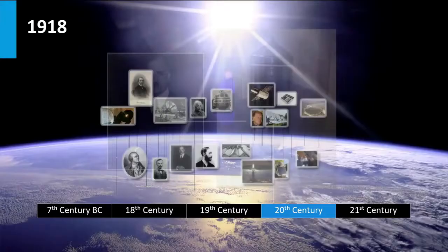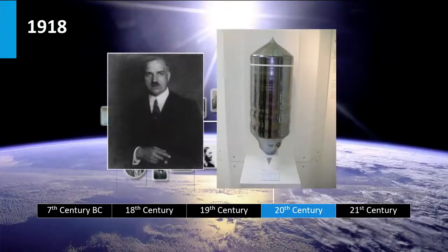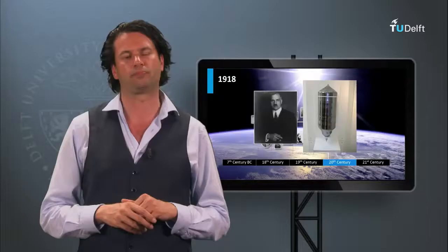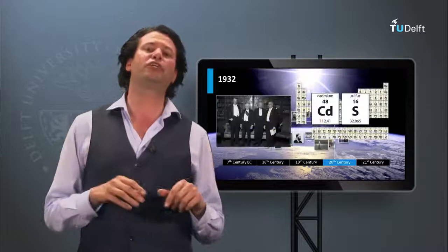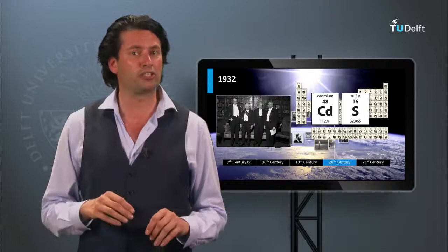In 1918 the Polish scientist Jan Czochralski developed a way to grow single crystalline silicon, a technique of great importance for the solar cell technologies based on crystalline silicon wafers, which has been developed in the second half of the 20th century. In week 4 we will come back to this processing method. In 1932 the photovoltaic effect was discovered in the 2-6 semiconductor material cadmium sulfide, by Audobert and Stora. In week 5 we will come back to solar cells based on 2-6 materials.